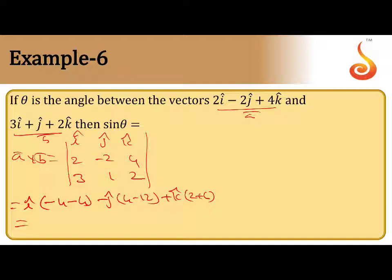2 plus 6, this is minus 8i plus 8j plus 8k. Make 8 common: minus i plus j plus k. You want sin theta.